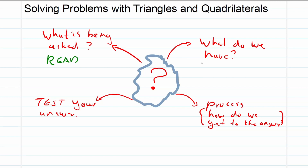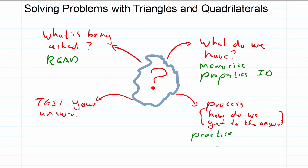In this process: 'what is being asked' means you need to read; 'what do we have' means memorize. Think of the different types — scalene, isosceles, equilateral triangles; trapezium, parallelogram, rhombus, square, rectangle, kite. You need to memorize their properties and identify them the moment you see them. Practice, be accurate, understand the order of your calculations, and test your answer.